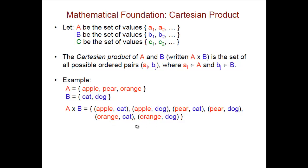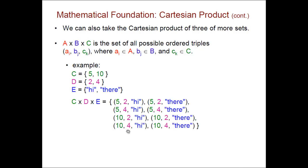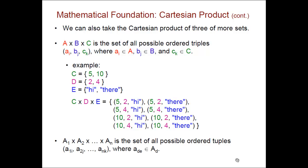In each ordered pair, the element from set A comes first and the element from set B comes second. If we take the Cartesian product of three sets A, B, and C, then we get the set of all possible ordered triples in which the first element comes from set A, the second element comes from set B, and the third element from set C. Here's an example of that. And then we can extend this even further to four or more sets, and the term used there is ordered tuples.